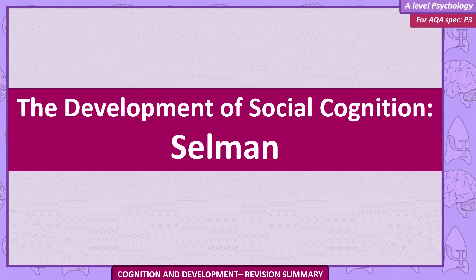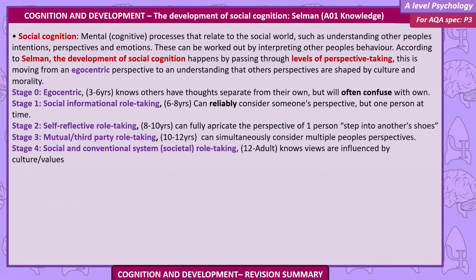The development of social cognition. Social cognition refers to mental and cognitive processes that relate to the social world, such as understanding other people's intentions, perspectives, and emotions, which can be worked out by interpreting other people's behaviour. According to Selman, the development of social cognition happens by passing through levels of perspective taking — moving from an egocentric perspective to an understanding that others' perspectives are shaped by culture and morality.